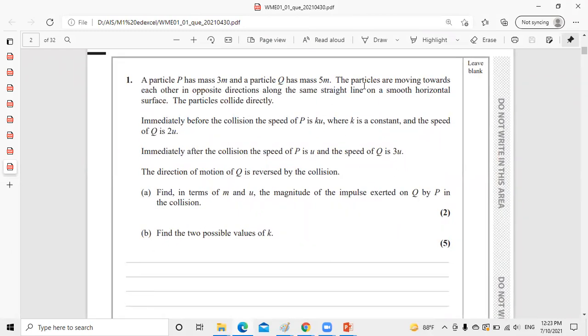Let's look at the question and answer it together. A particle P of mass 3M and a particle Q with mass 5M are moving towards each other. That means one is positive and one is negative because they are moving in opposite directions in the same straight line on a smooth horizontal surface. The particles collide directly.